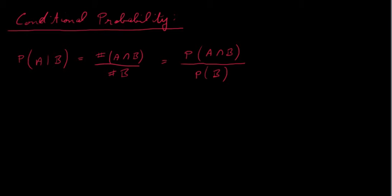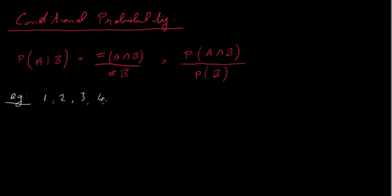Let's look at an example of how we would actually use it in practice. The first example is about a fair six-sided die. You've got one, two, three, four, five, six — this is the sample space for a six-sided die, all the outcomes that are possible when you throw it.